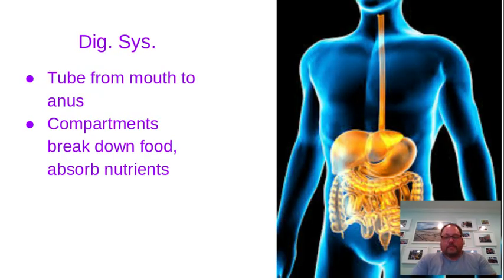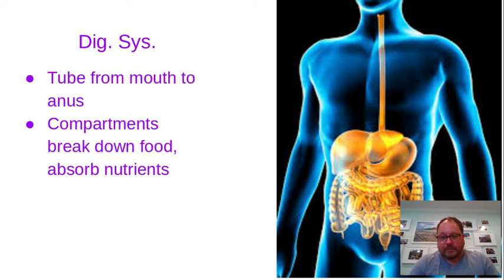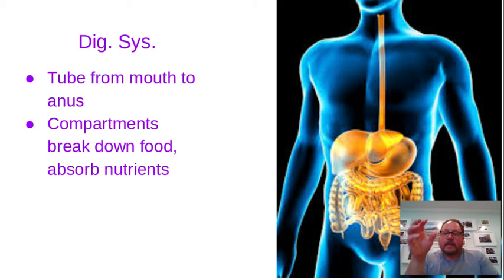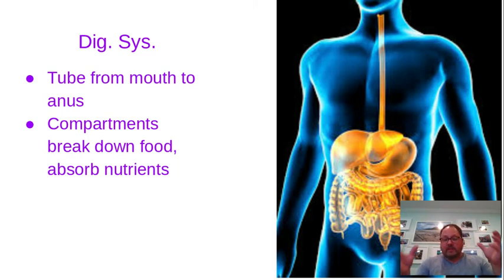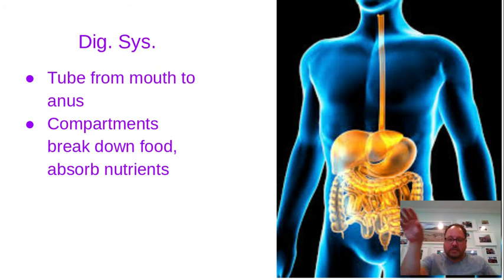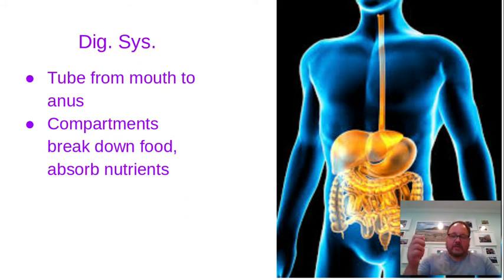Your digestive system. You're made of materials from your previous meals — you are what you eat, and that's absolutely the case. Your digestive system takes material from outside the body, breaks it down, and then allows you to absorb it into your body, where it becomes part of you. It's a compartmentalized system — it takes in materials, breaks them down, and allows you to absorb them into your bloodstream.